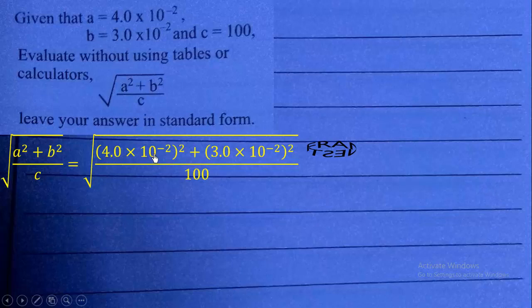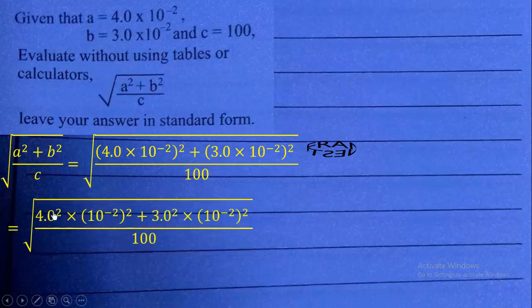We square each of these values. So, we get 4 squared times 10 exponent negative 2 squared. Over here, we have 3 squared.